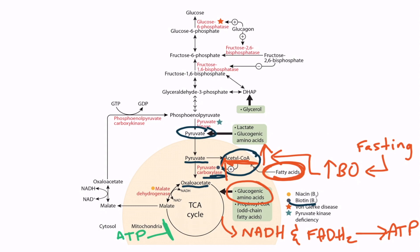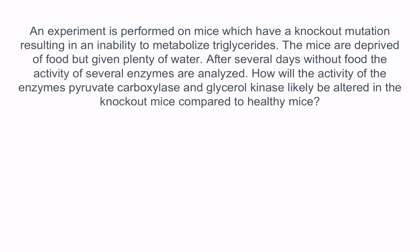Let's do a question. An experiment is performed on mice which have a knockout mutation resulting in an inability to metabolize triglycerides. The mice are deprived of food but given plenty of water. After several days without food, the activity of several enzymes are analyzed. How will the activity of the enzymes pyruvate carboxylase and glycerol kinase likely be altered in the knockout mice compared to healthy mice? Remember that acetyl-CoA normally activates pyruvate carboxylase, which promotes gluconeogenesis. Triglycerides are normally metabolized into glycerol and fatty acids, which we'll talk more about in a minute.